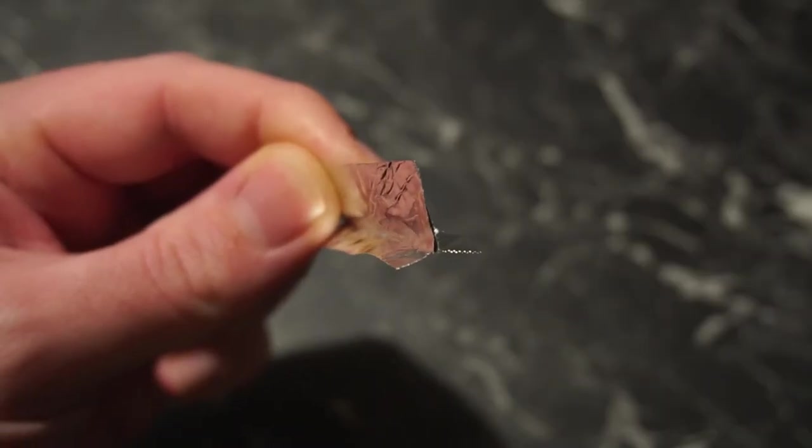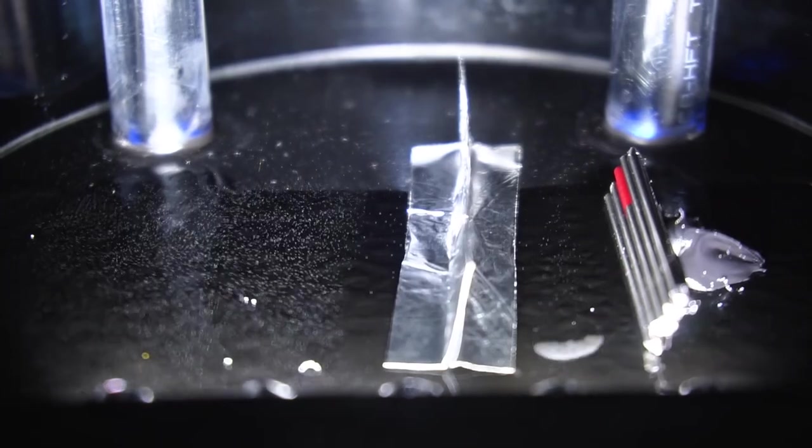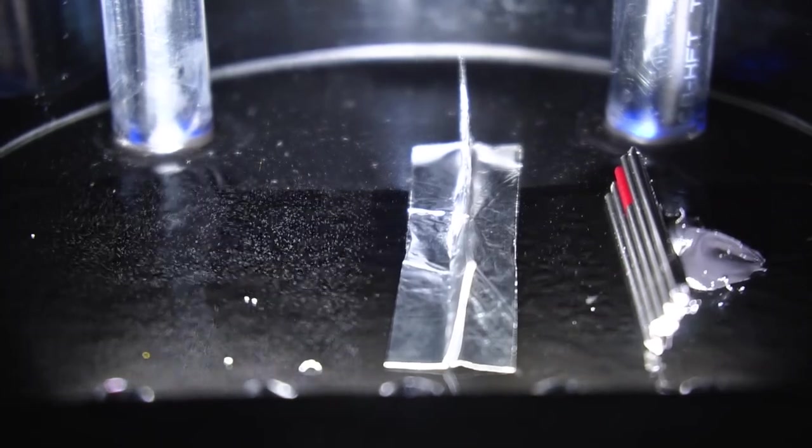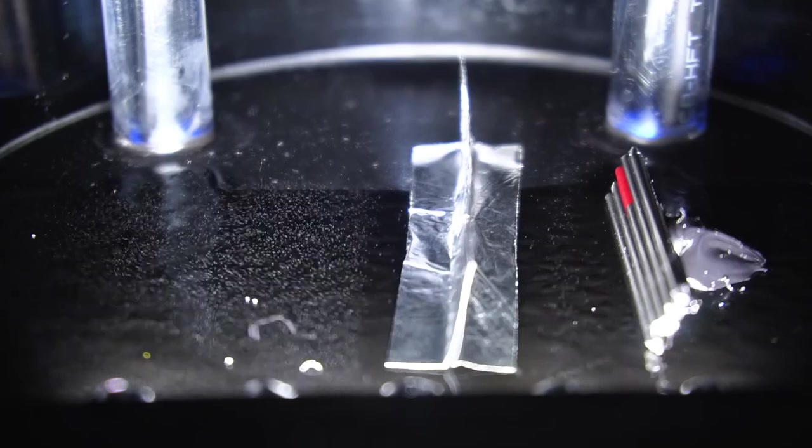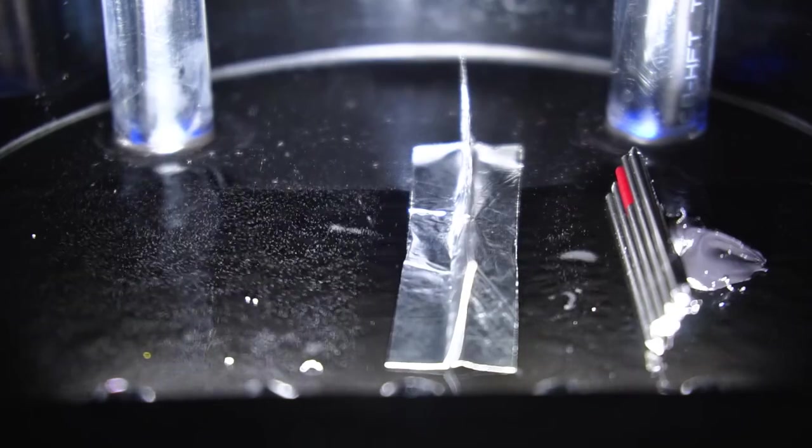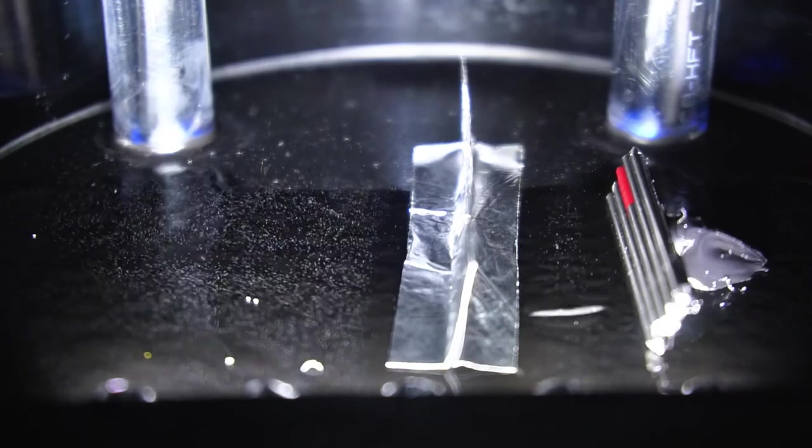Beta rays can pass through paper but a layer of foil stops them dead in their tracks. Beta rays can penetrate skin and in high enough doses can cause skin burns. However the amount of beta rays coming from this welding electrode is very low. Going in an aeroplane or getting an x-ray will expose you to far higher levels than what I'm showing you here.